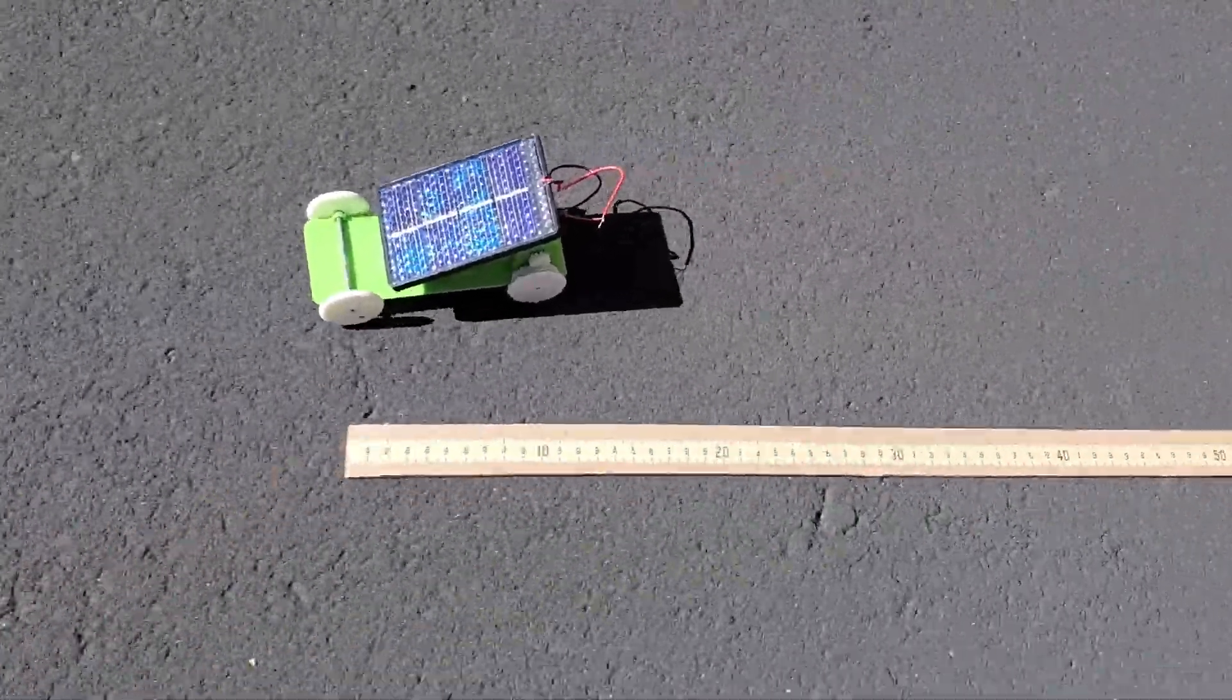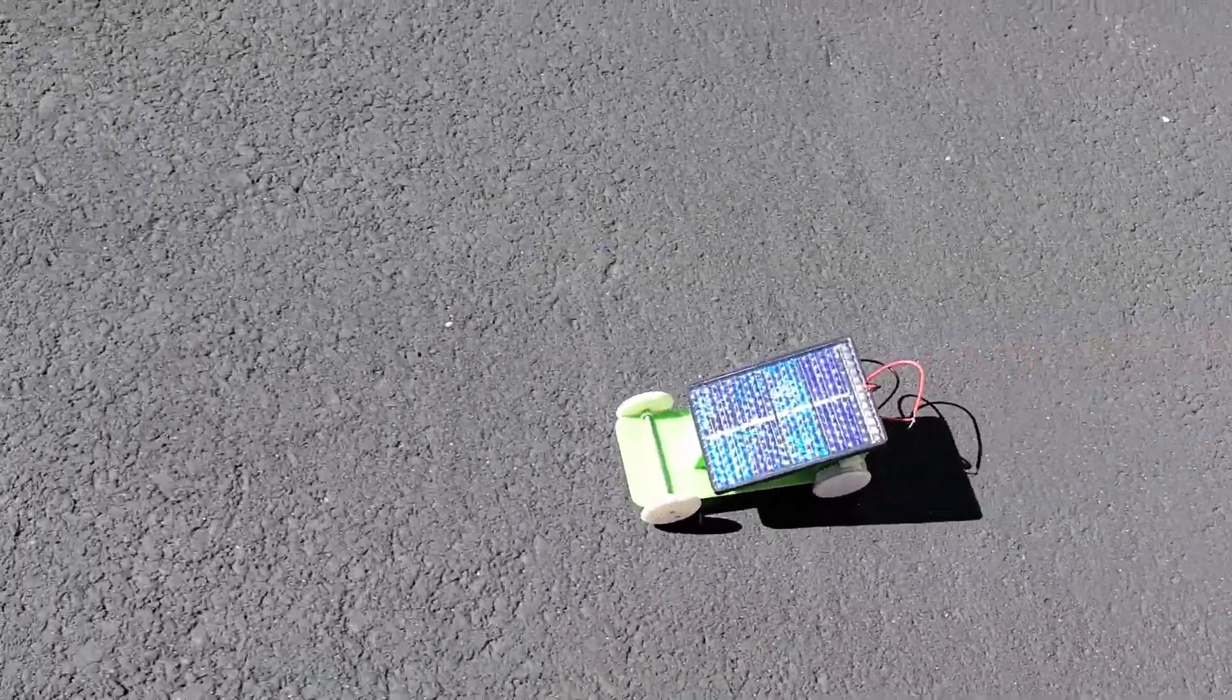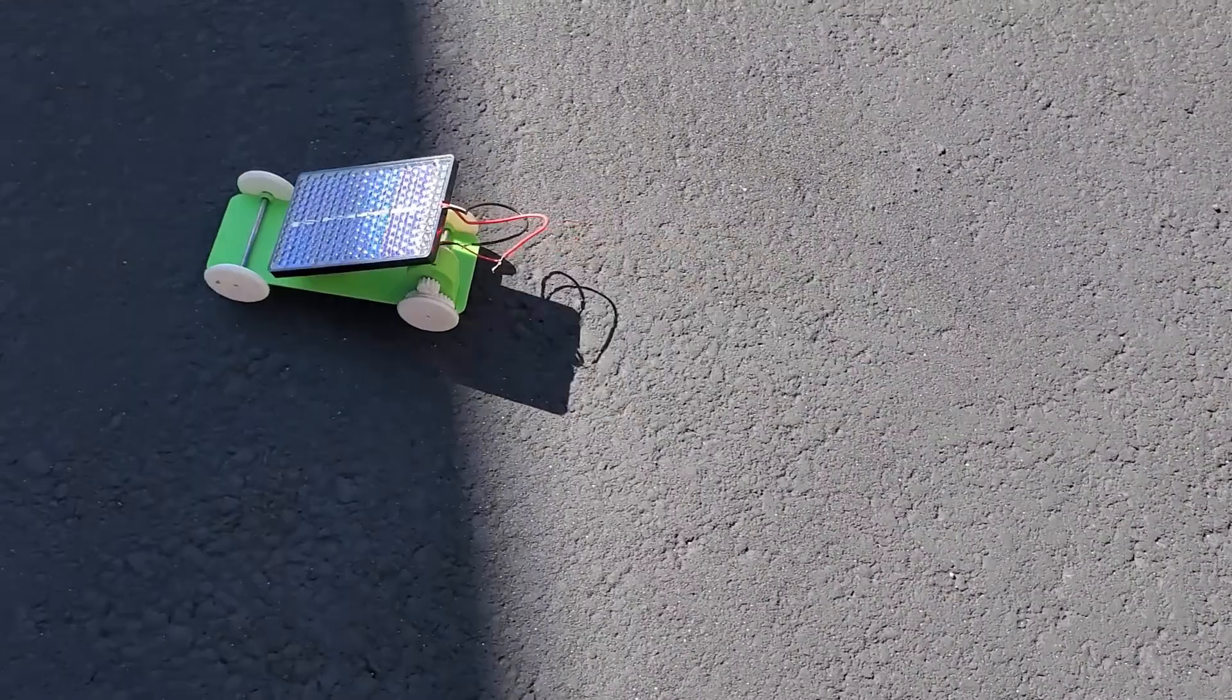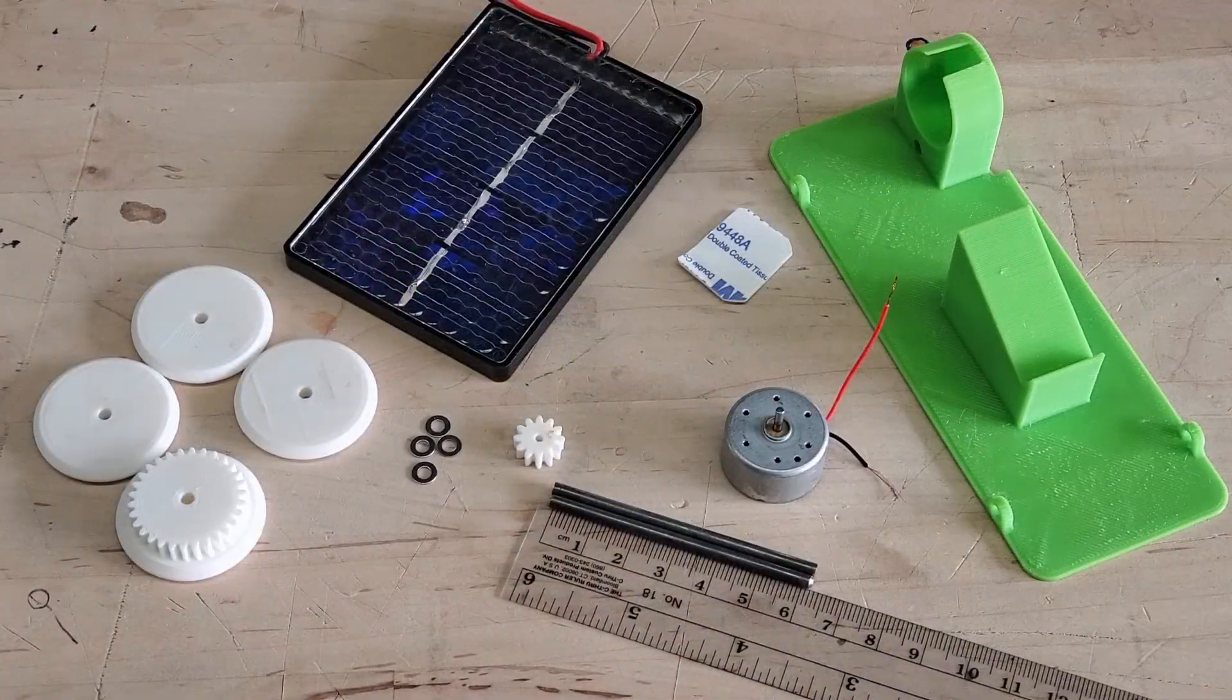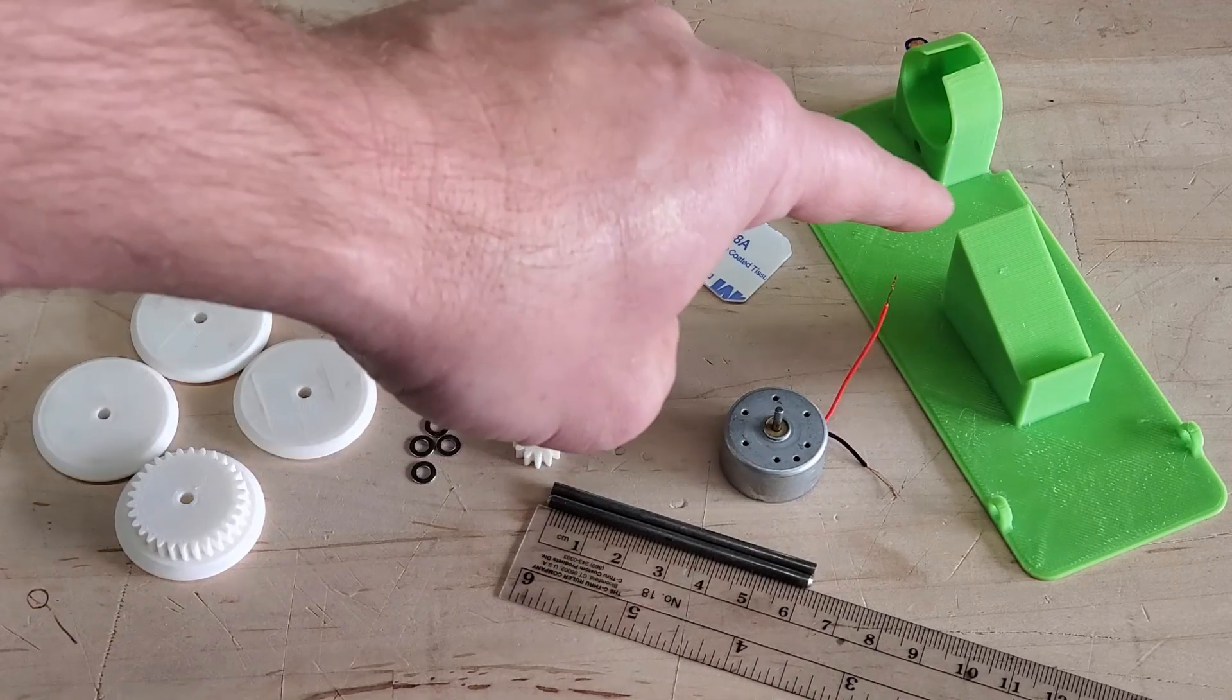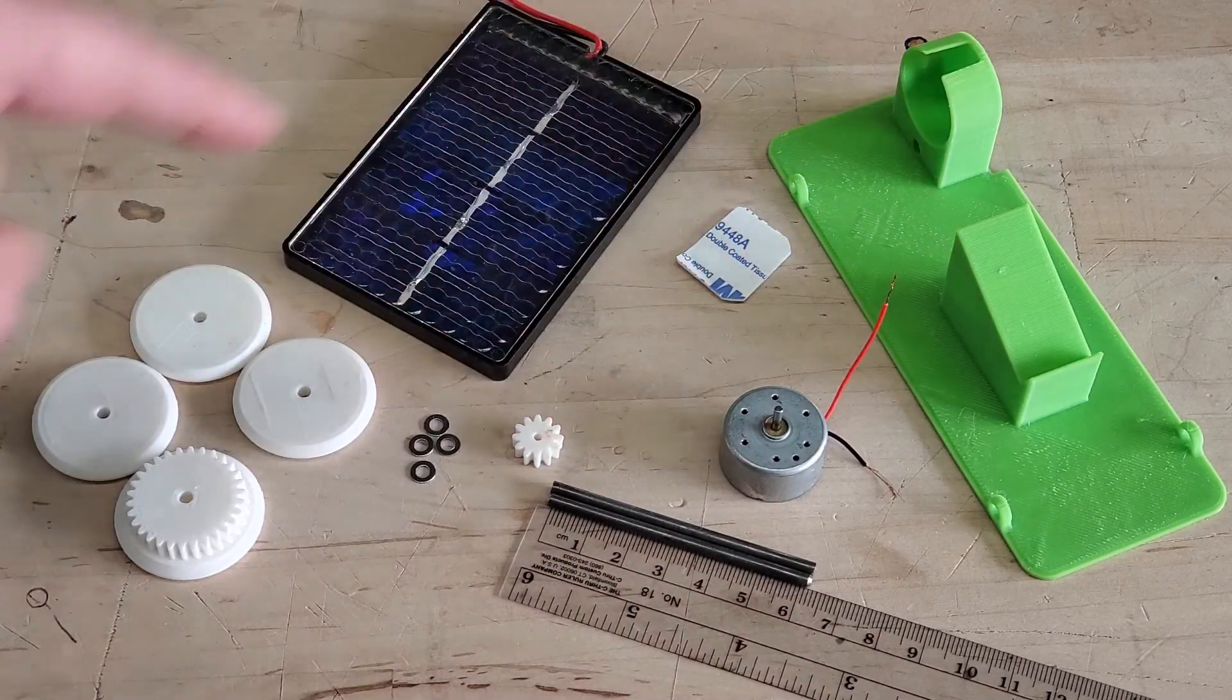Hey everyone, welcome back. In this video we're going to learn how to manually assemble our 3D printed solar car. Let's get started. You will need the following materials: one 3D printed solar car chassis, three